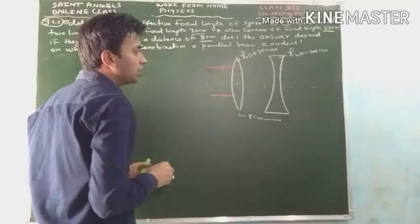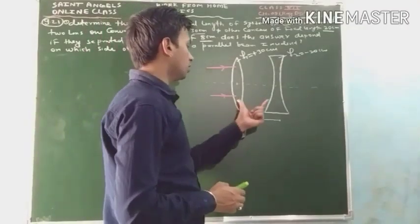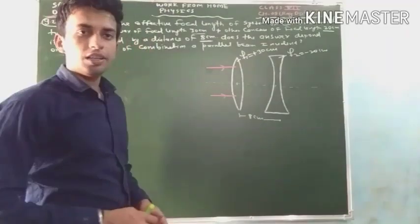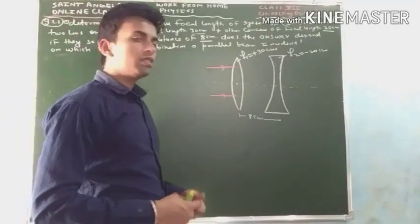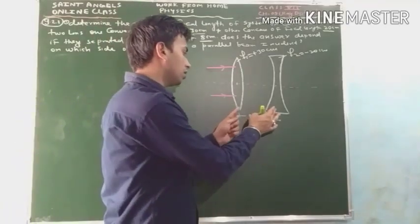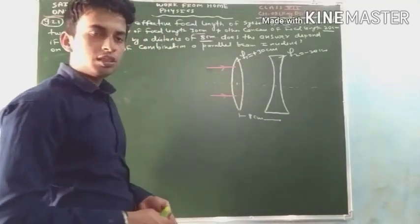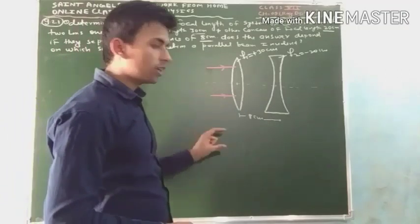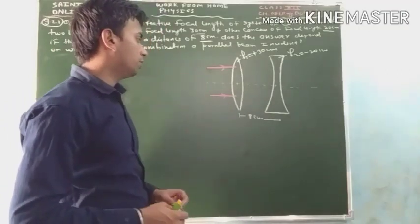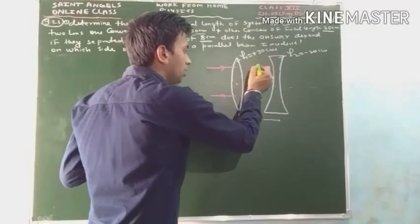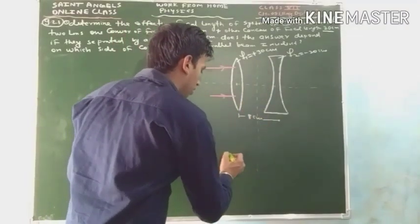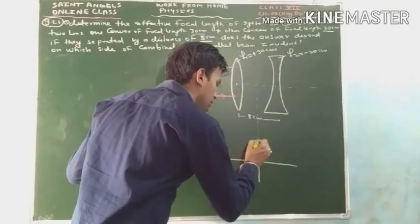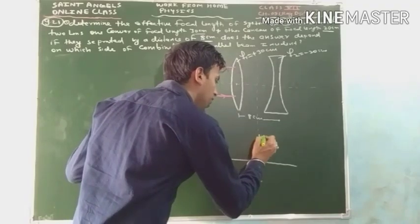We have to find the effective focal length of the combination. The equivalent or effective lens is that single lens which replaces the combination such that the final position of the image remains unaffected for the same object. Generally, the effective or equivalent lens is placed between the combination of lenses.